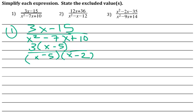Which means that as I go here, I can cancel out x minus 5 and x minus 5, and my simplified expression is 3 over x minus 2.